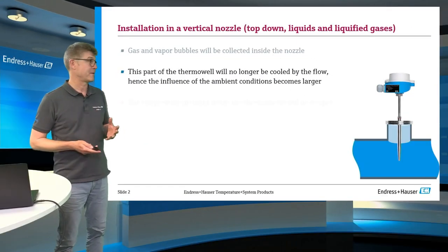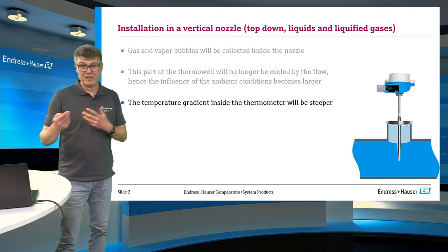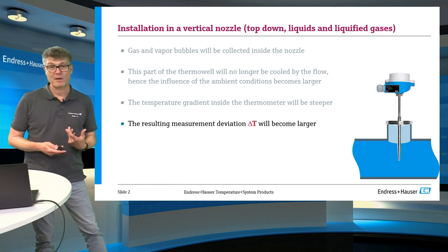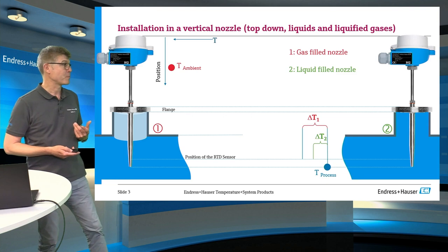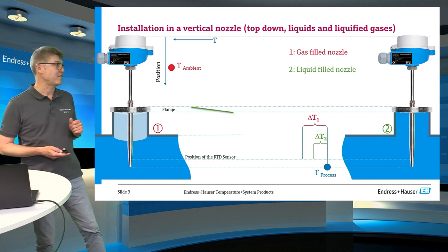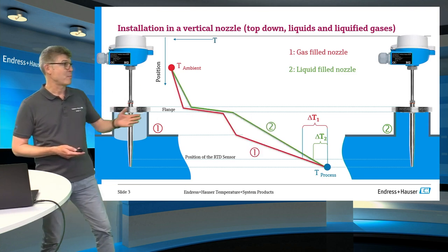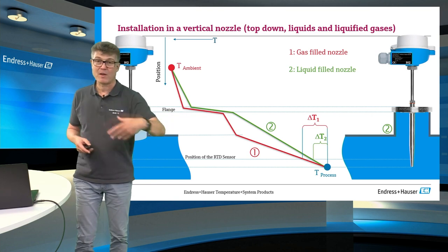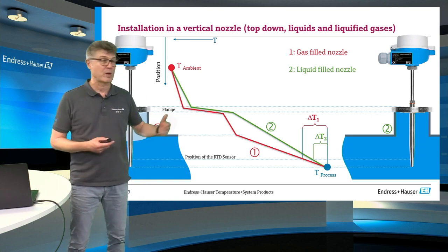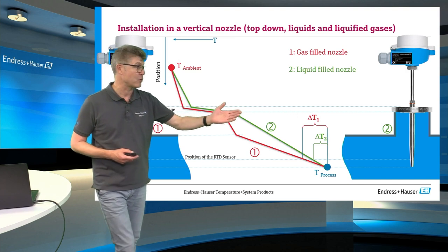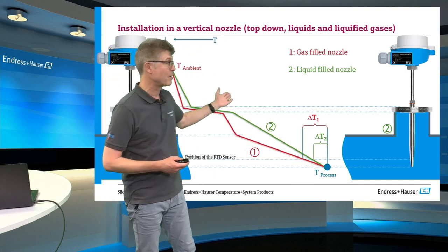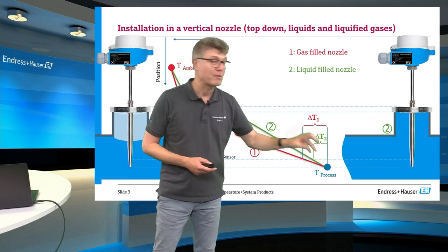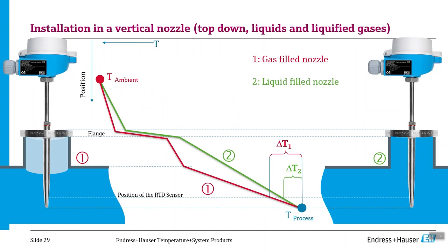Gas bubbles will be collected and this part of the thermal well is no longer surrounded by the flow — it's cut off and the temperature gradient becomes different. Let's have a look. We have two cases: number one, trapped gases; number two, the ideal state. In the ideal state, we see the graph as we know it outside the process connection, and inside the liquid we have a simplified gradient to the process temperature. Depending on the sensor position, we will have a more or less small measurement error.